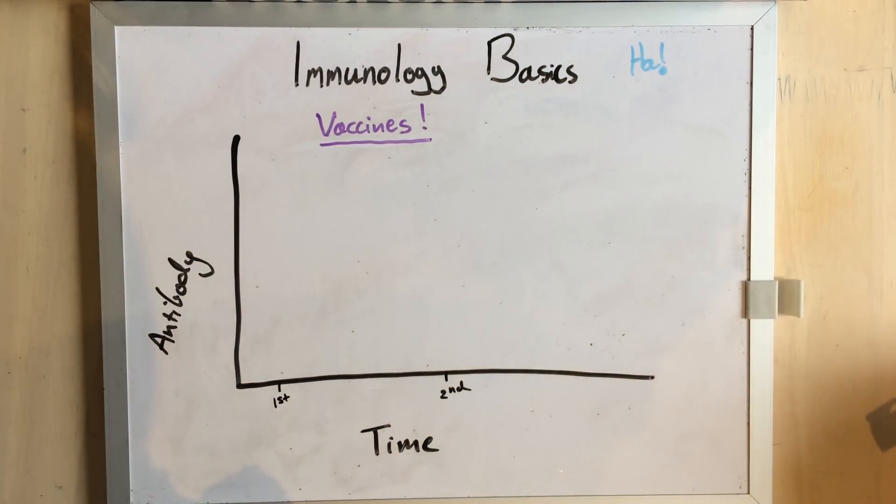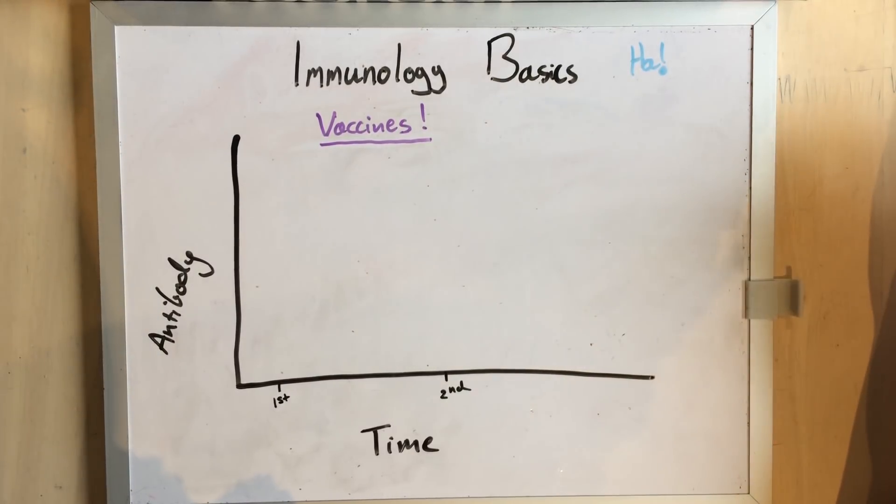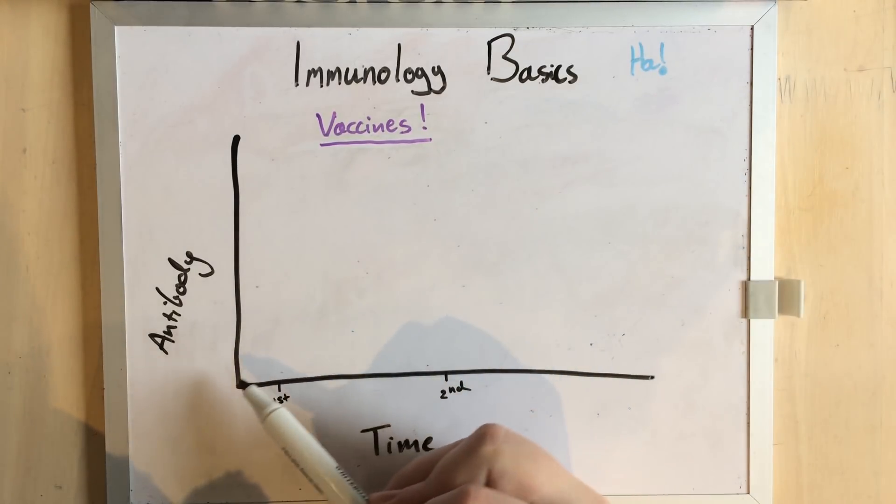We take a whole bunch of antigens for whatever the disease is we're trying to target, and we expose the immune system to it, so it has time to build up specific antibodies to fight it off. Doing this takes time. So, initially you have a naive animal that has no antibodies to its target disease.